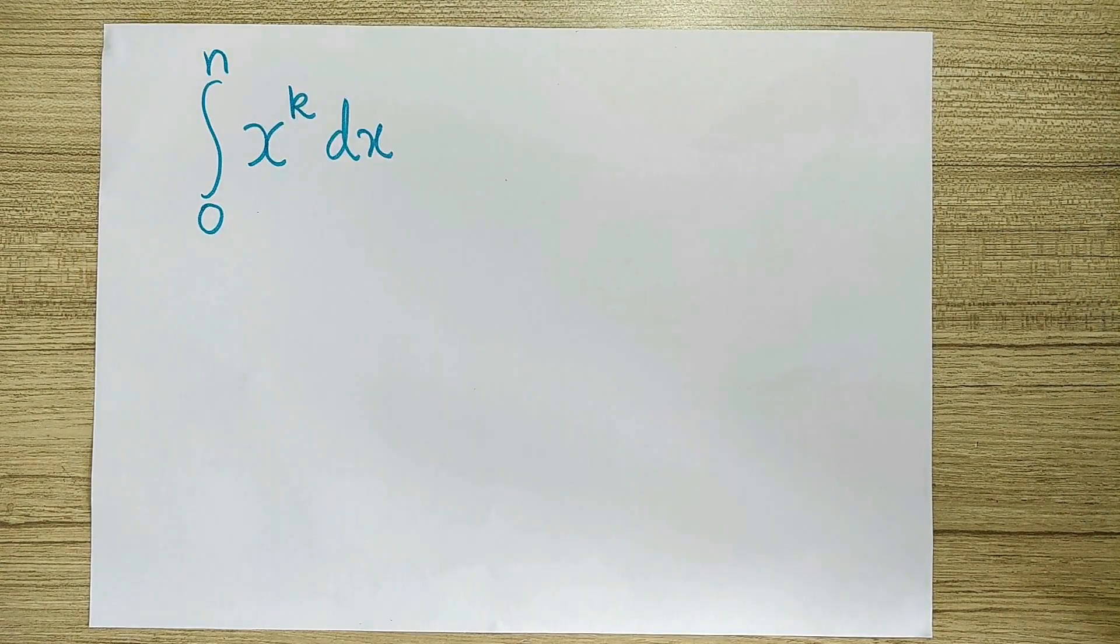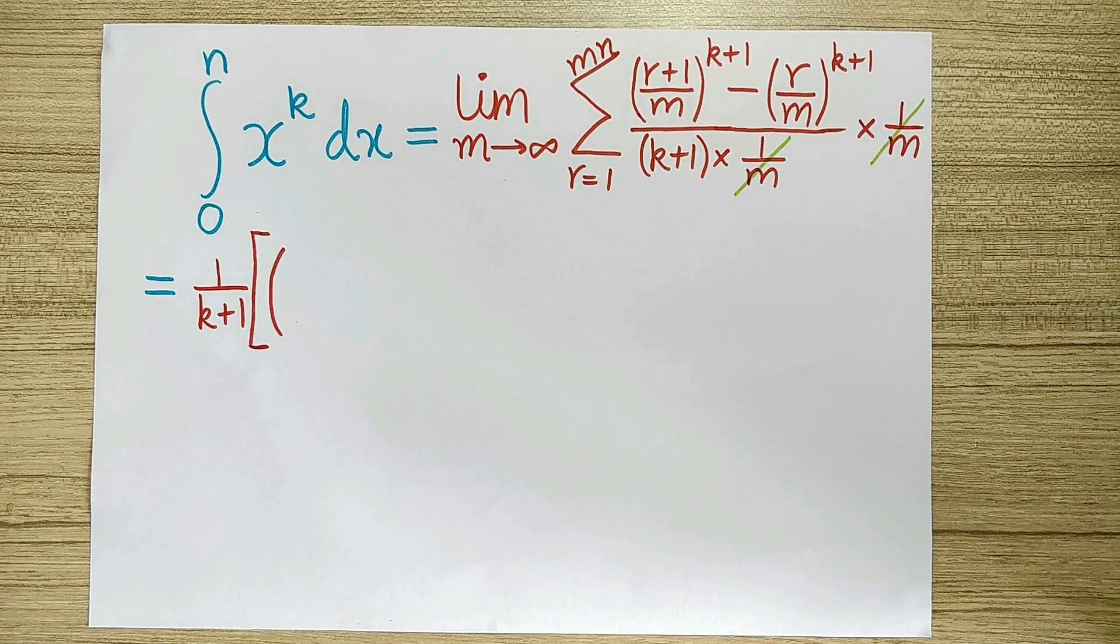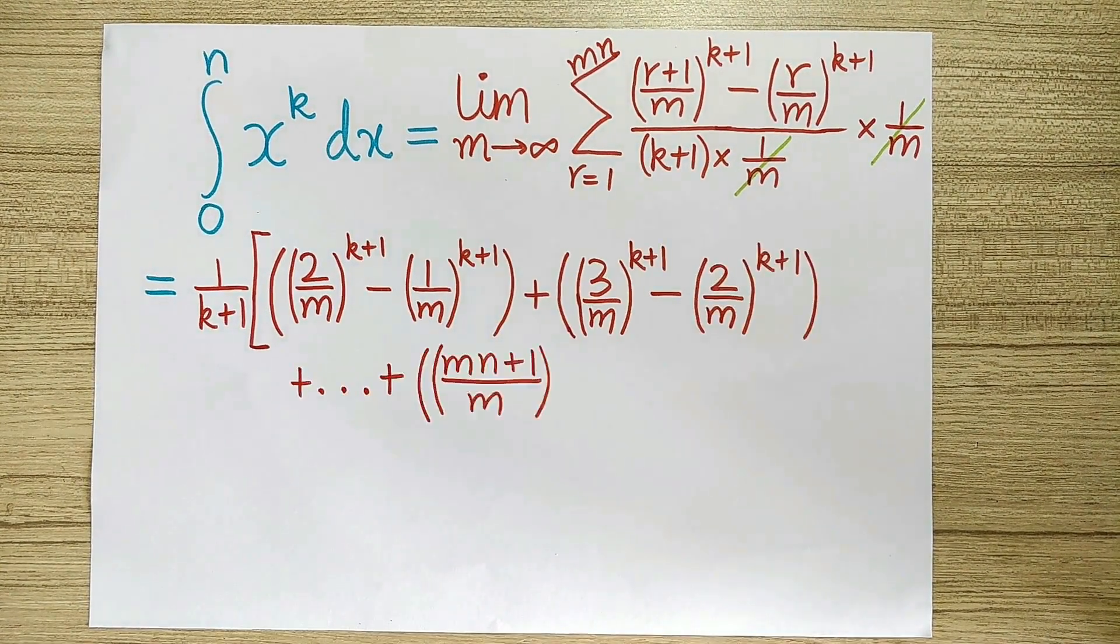Plugging all this into our formula for the integral, we get a lovely telescoping sum which evaluates to just what we expected, n to the k plus 1 over k plus 1.